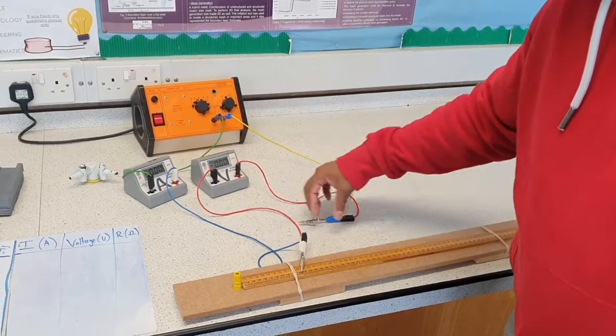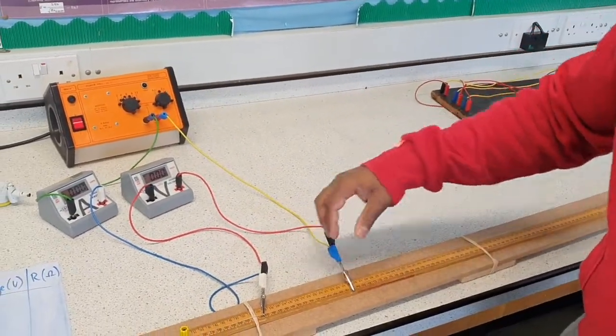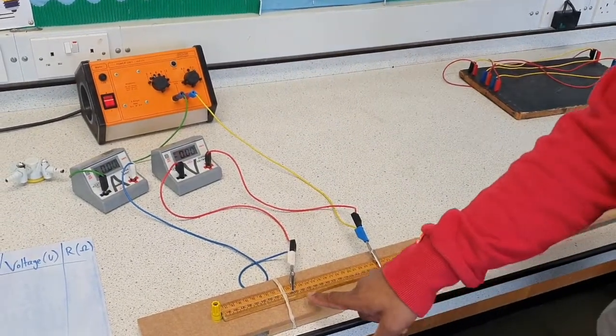It'll be easier if you have the wire connected to a meter ruler so that you can make accurate measurements as you're increasing by increments of 10.